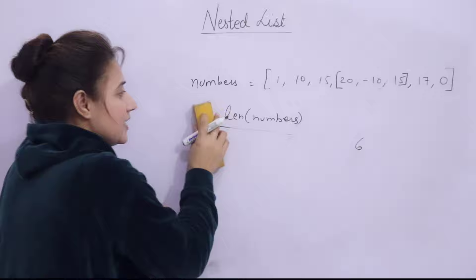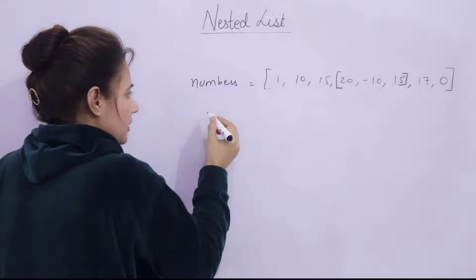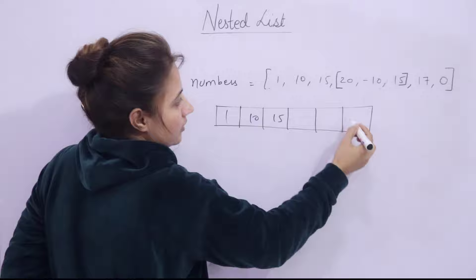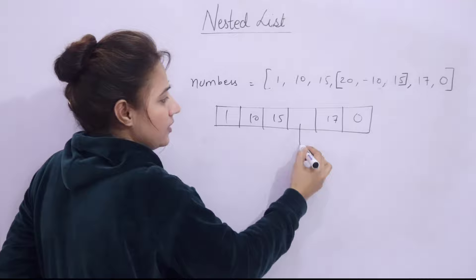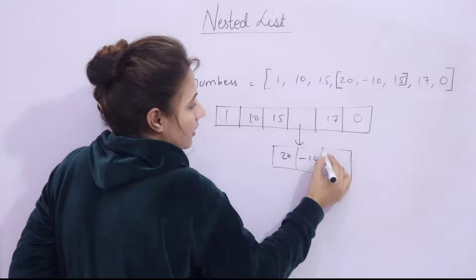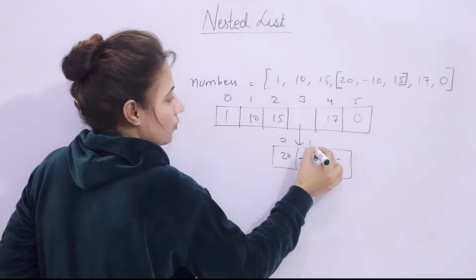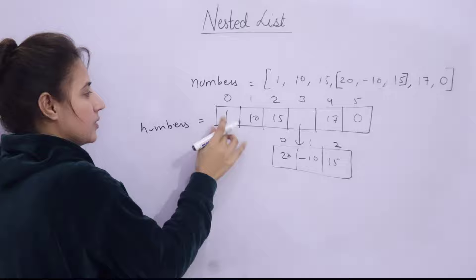Let me show you the memory allocation. The outer list has 6 elements: 1, 10, 15, then 17, then 0 — and at one position, rather than a direct value, we store a reference to the inner list [20, -10, 15]. The indices of the outer list are 0, 1, 2, 3, 4, 5, and the inner list has its own indices 0, 1, 2. The list is named 'numbers'.